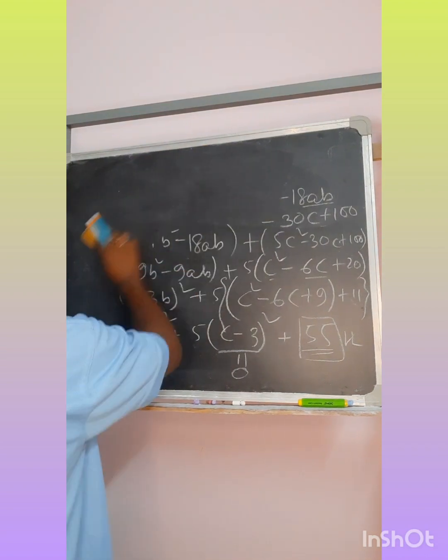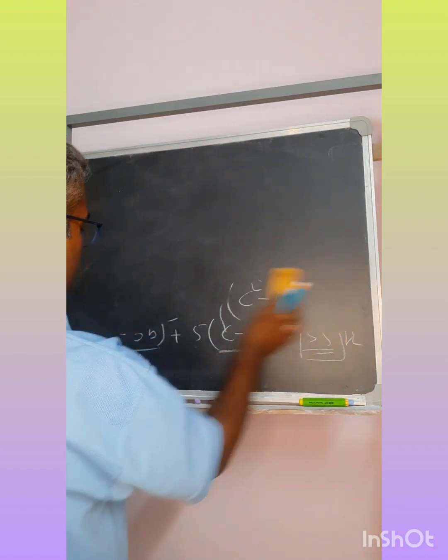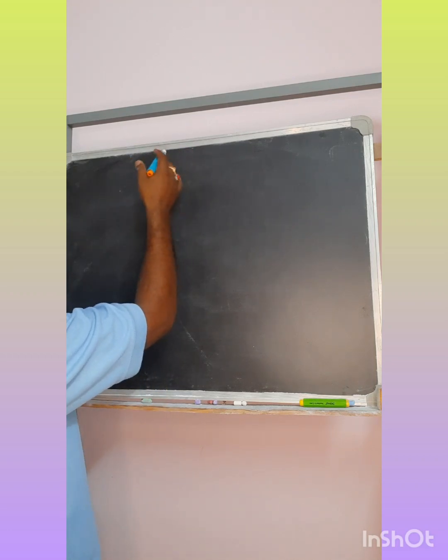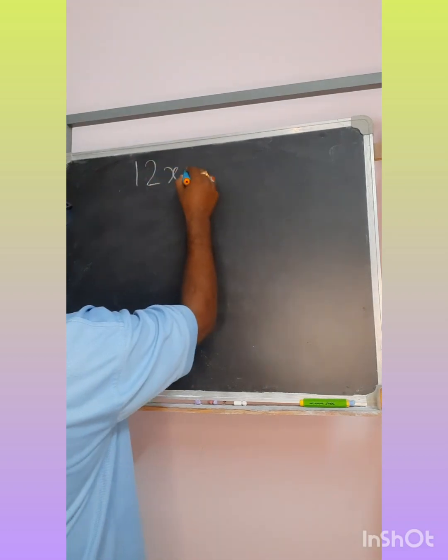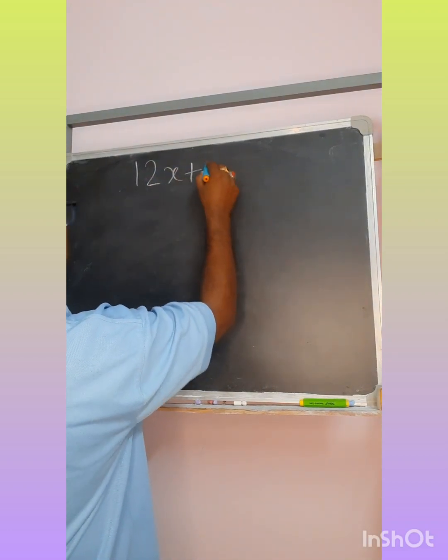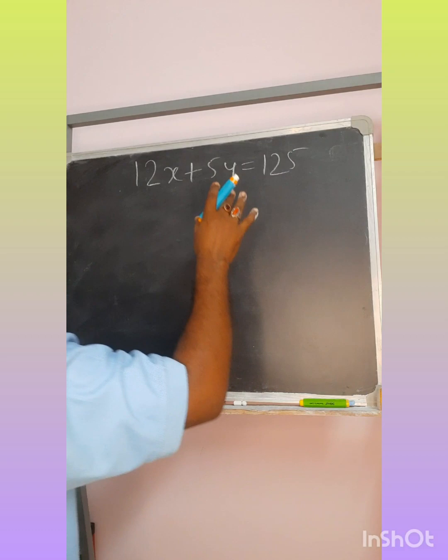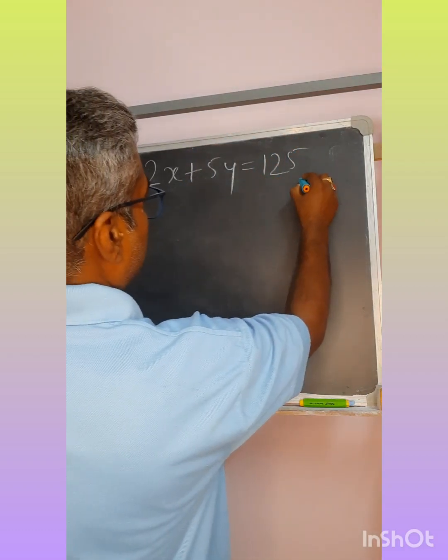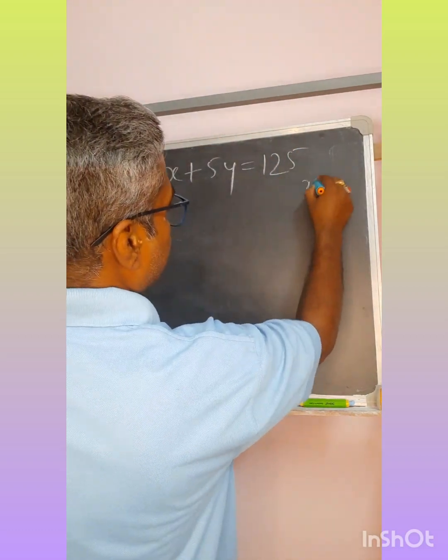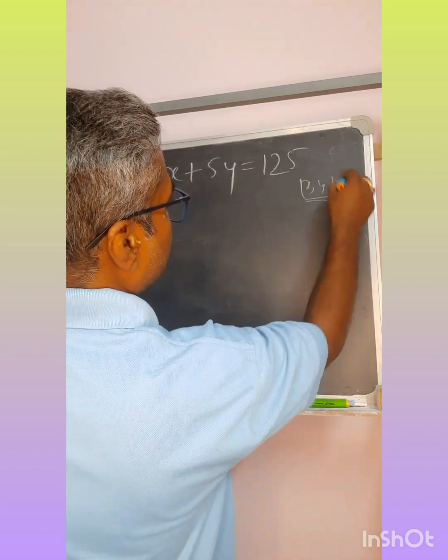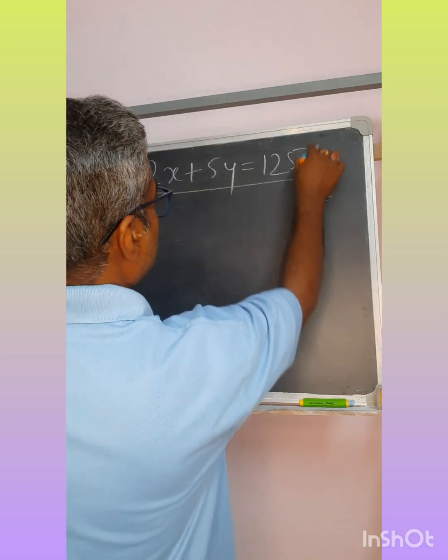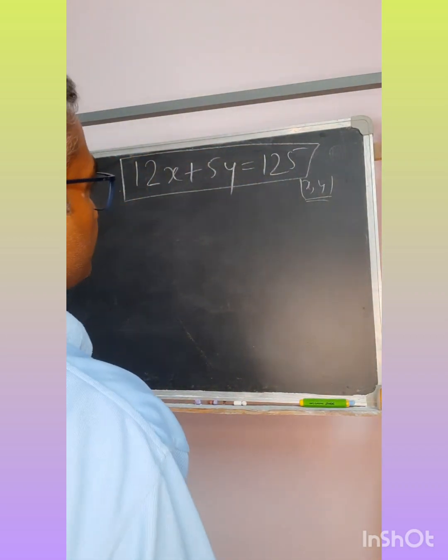Let me give you one problem to practice at home. For positive integers, just find out the number of possible solutions for this expression, for any positive integer solution. That means there would be a pair of x and y values, but these values have to be positive. How many such solutions you can find out from this expression, that you have to find.